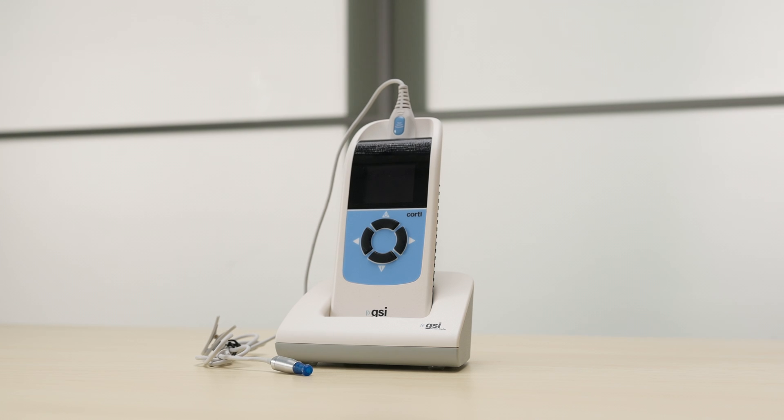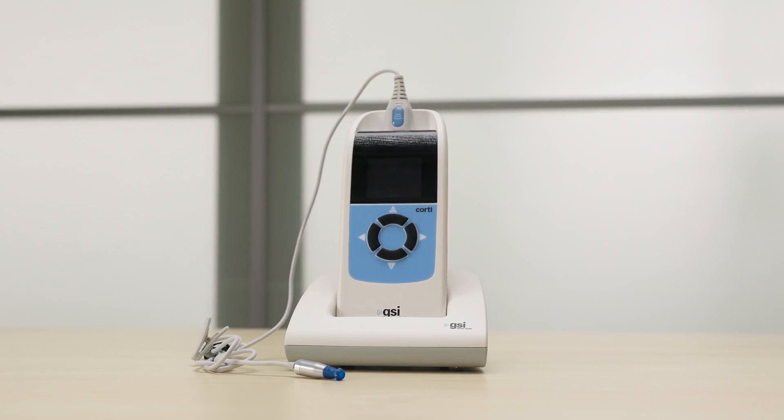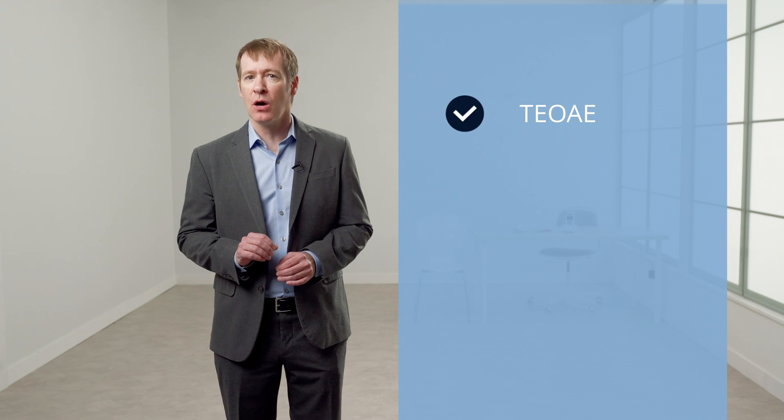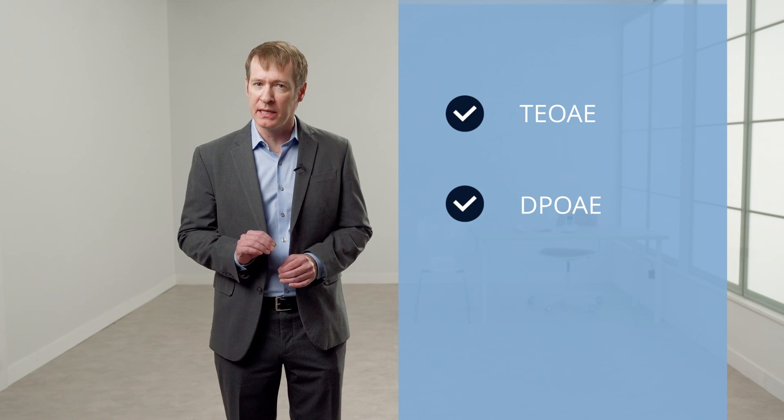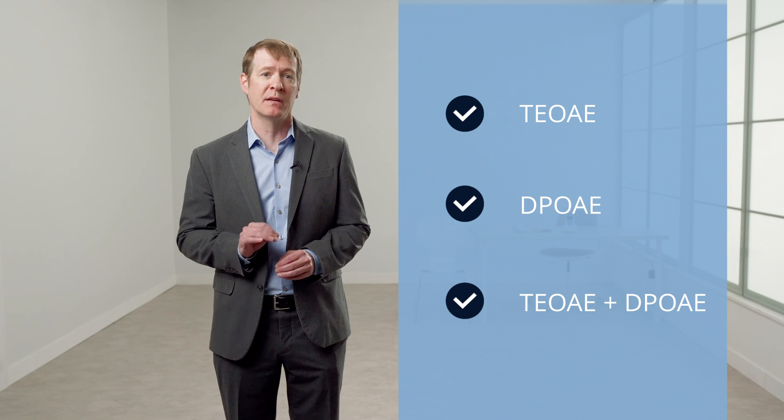Thank you for taking time to watch the GSI Cordy tutorial. The Cordy is a handheld screening or diagnostic otoacoustic emission device. It features an easy four-button navigation panel and intuitive software in a compact hardware design. The Cordy may be configured with TE-OAE, DP-OAE, or both for either screening or diagnostic otoacoustic emissions, making it a great choice for many applications from newborn hearing screening to adult diagnostics.